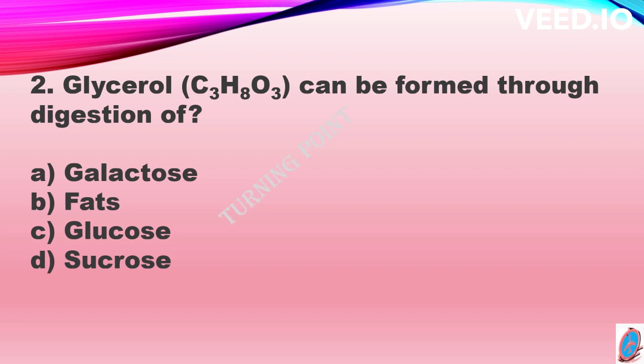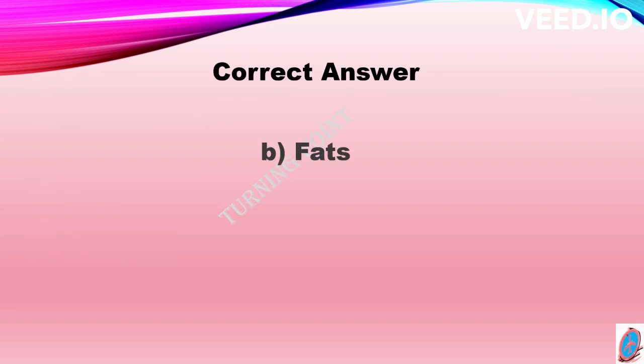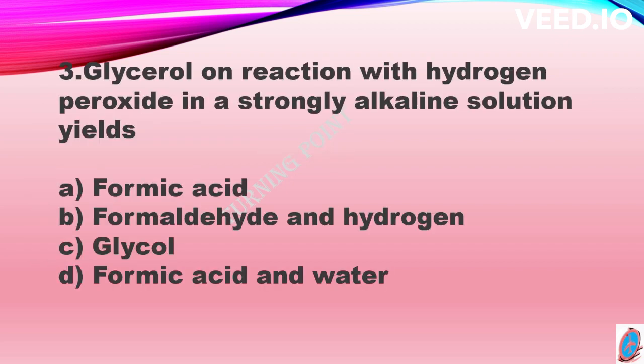The third question: glycerol on reaction with hydrogen peroxide in a strongly alkaline solution gives option A formic acid, option B formaldehyde and hydrogen, option C glycol, and option D formic acid and water. The correct answer is option B, formaldehyde and hydrogen.